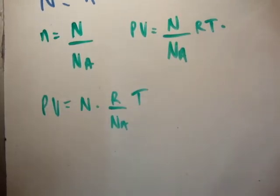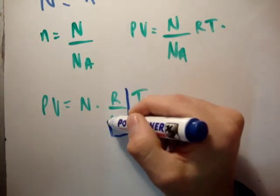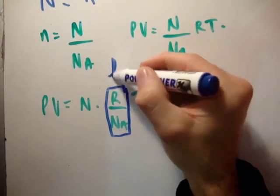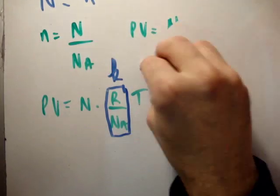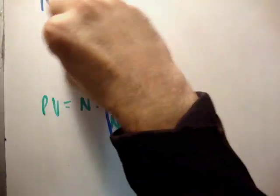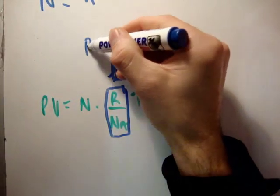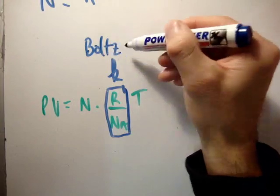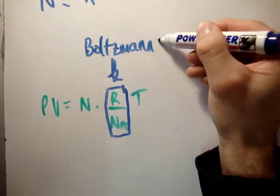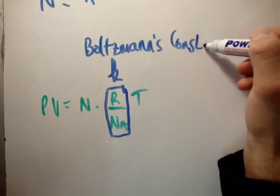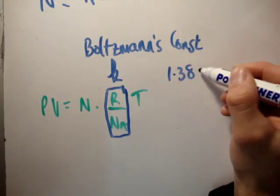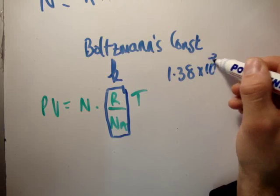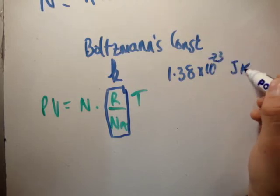And I'm going to tell you that we actually call, although this is a constant, we call it something else. We give it a placeholder K, and I'm sure you know what I'm talking about. We're talking about Boltzmann's constant. This is Boltzmann's constant. It has a value of 1.38 times 10 to the minus 23 joules per Kelvin.